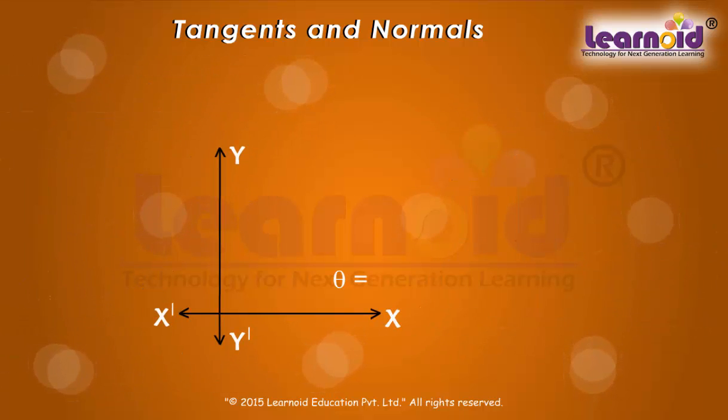If θ tends to π/2, then tan θ = ∞. Tangent line is perpendicular to the x-axis, i.e., parallel to y-axis. In this case, equation of tangent is x = x₀.